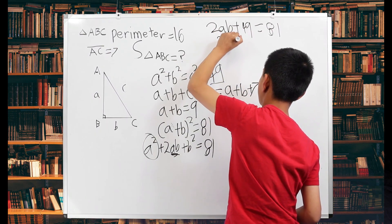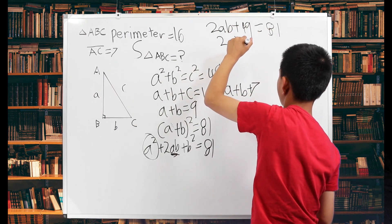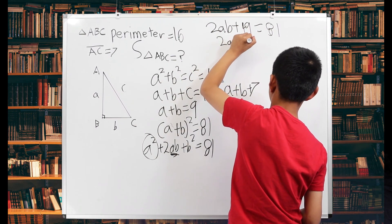2AB, when you subtract 49 from both sides, that's 2AB is equal to 32.